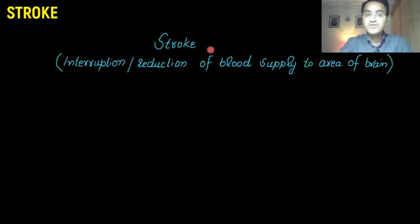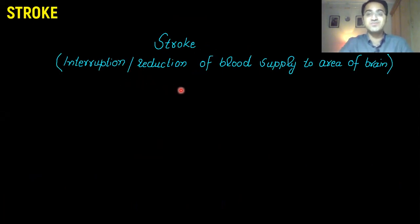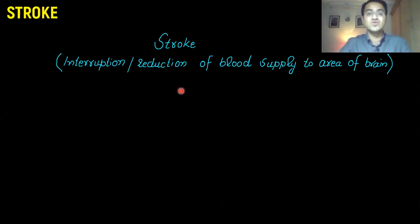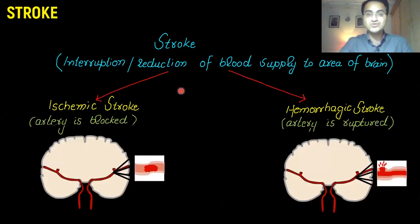First of all, we will define stroke. Stroke is defined as interruption or reduction of blood supply to an area of the brain that results in brain death. Stroke has two types: ischemic stroke and hemorrhagic stroke.